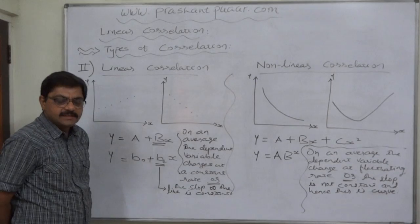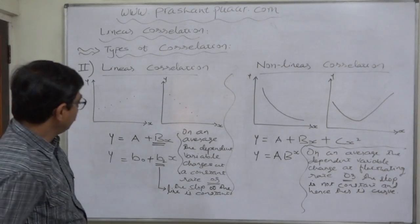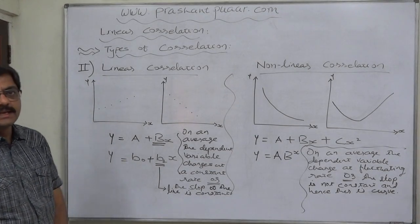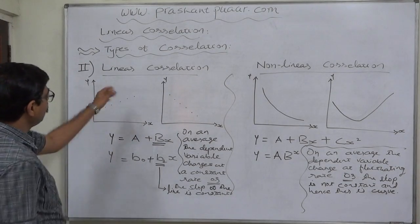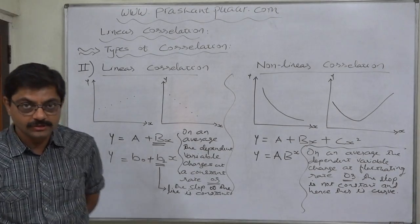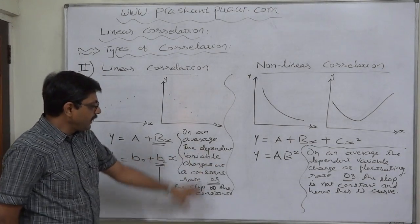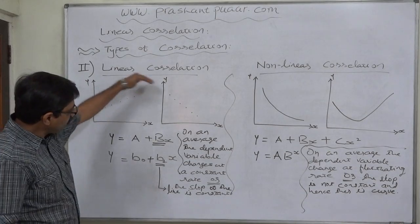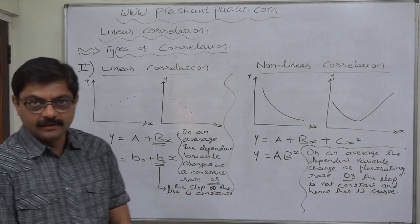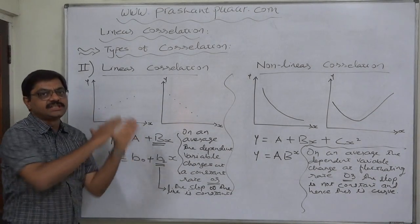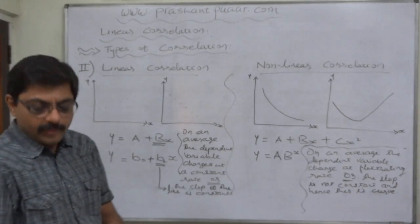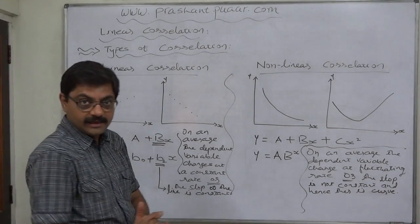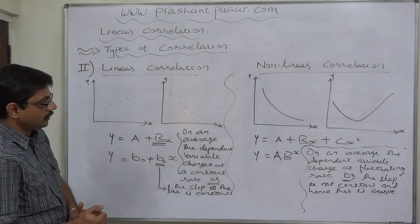Linear correlation — in simple words, if we plot the values of the two variables, dependent as well as independent, on a graph paper, we get an image like a straight line. That's why it is also called a straight line relationship or straight line correlation. The technical aspect is that on an average the dependent variable changes at a constant rate, meaning the slope of the line remains constant, and that's why we get a straight line when we plot the sample points.